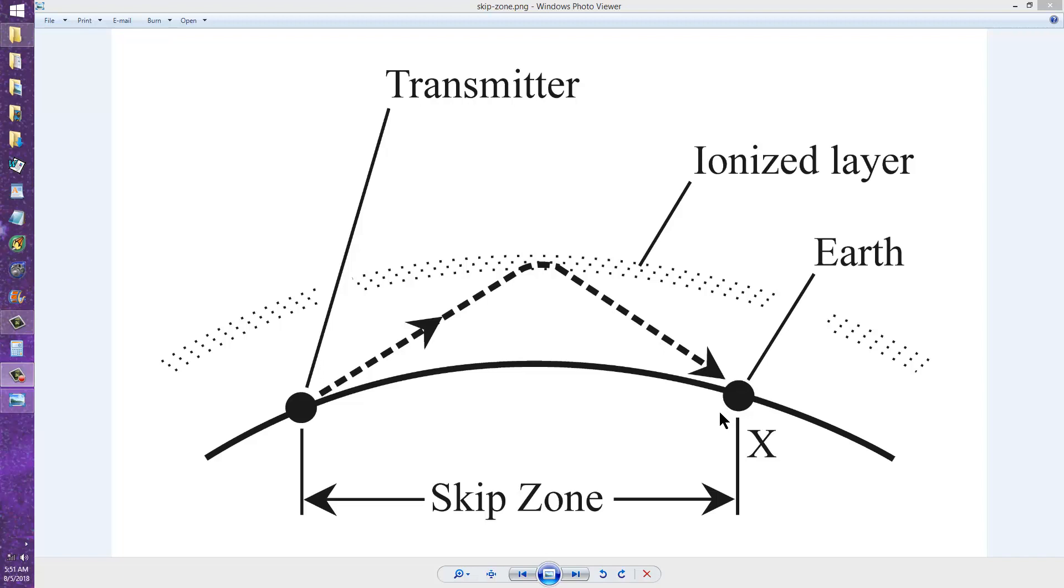Point X is within range of communication. If point X were further down along, you'd still be able to hear it. But if it were closer in, this angle between the radio wave and the ionosphere at the point of return would be too great, and the station would lie within the skip zone. That's what the skip zone is. It's a zone where signals, particularly on the upper HF bands, tend to skip over.